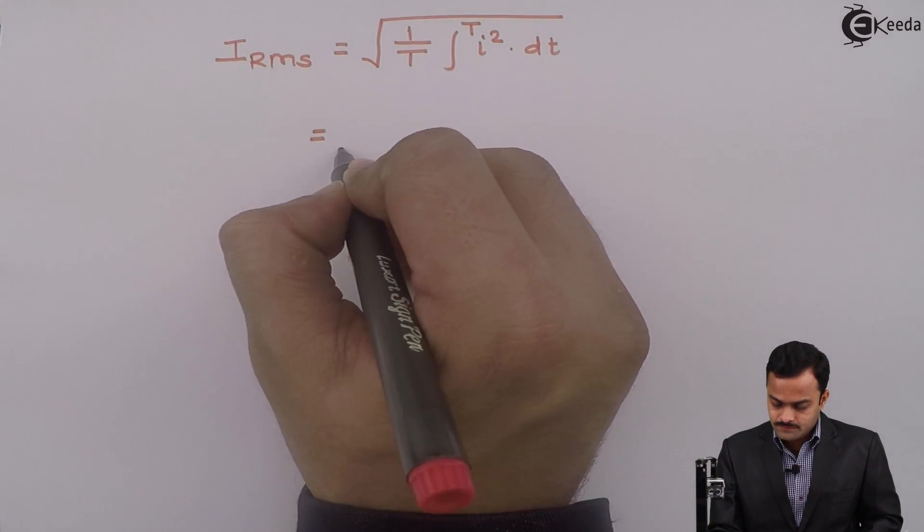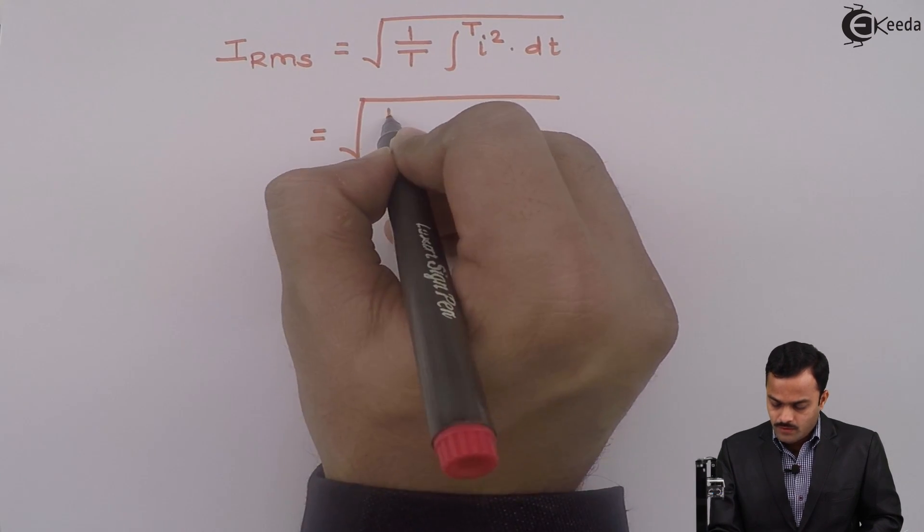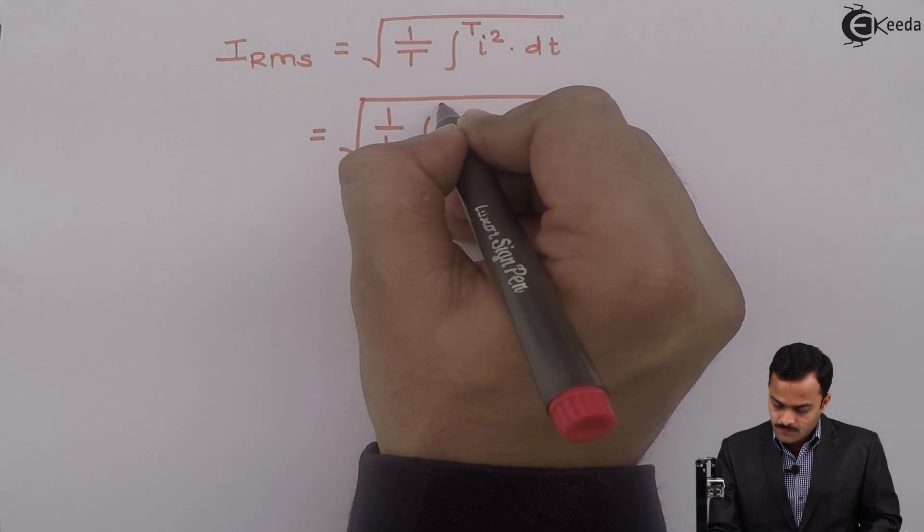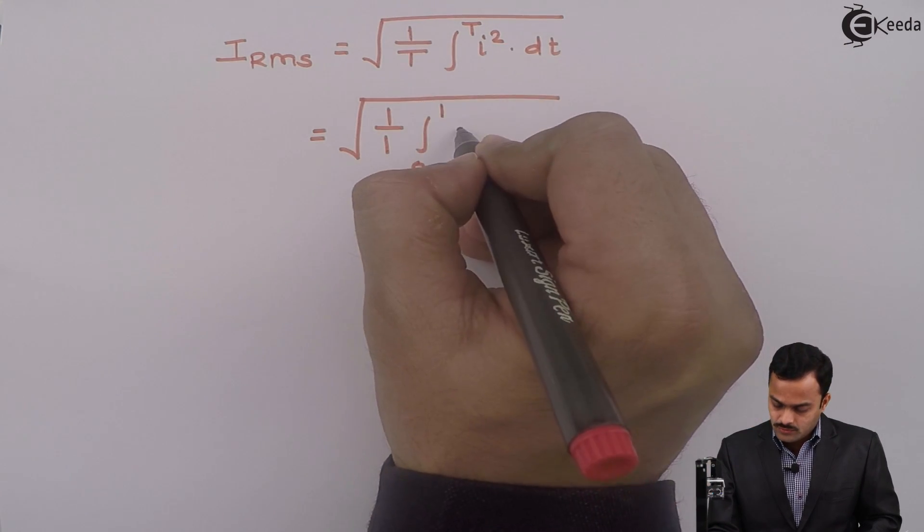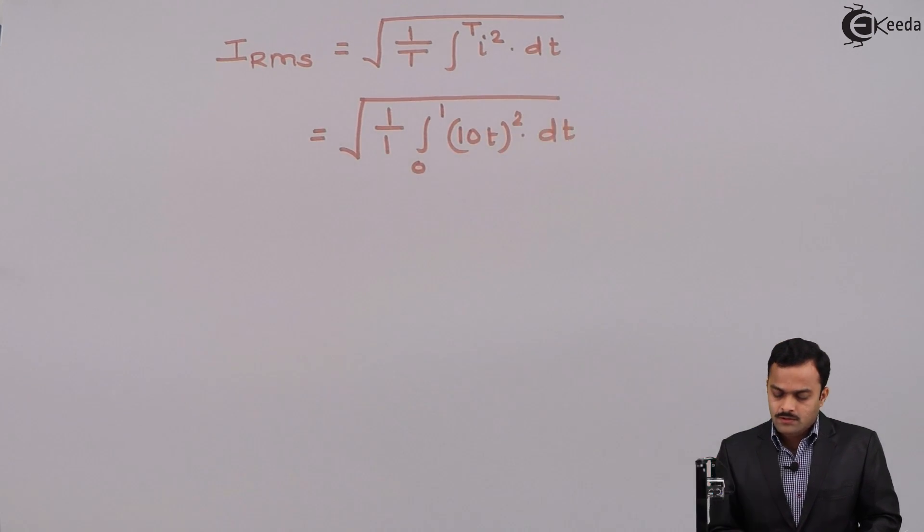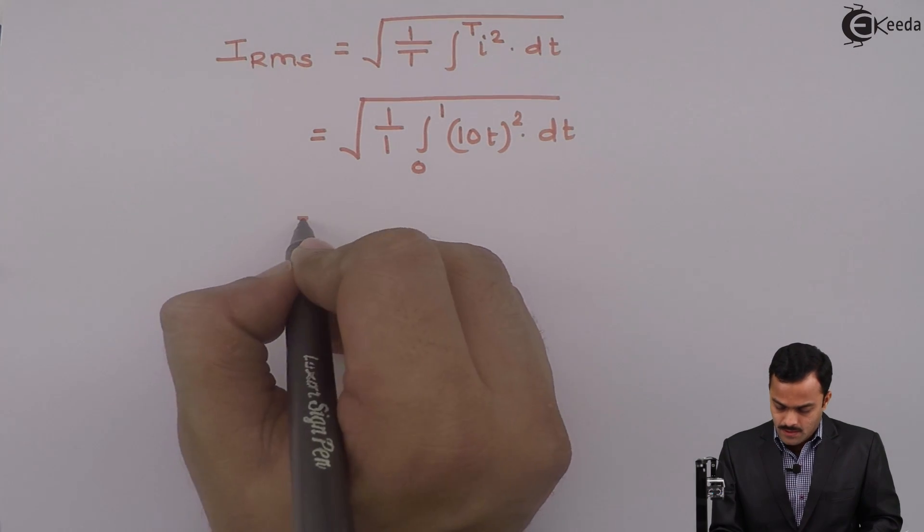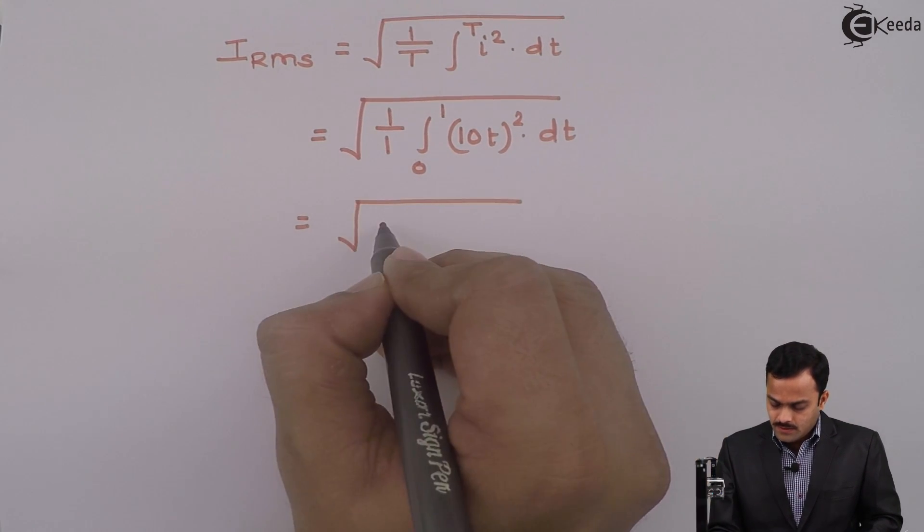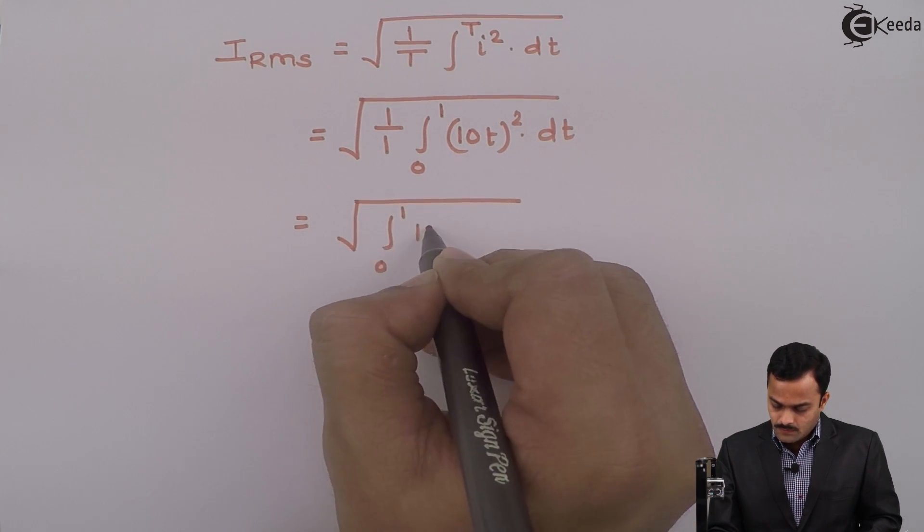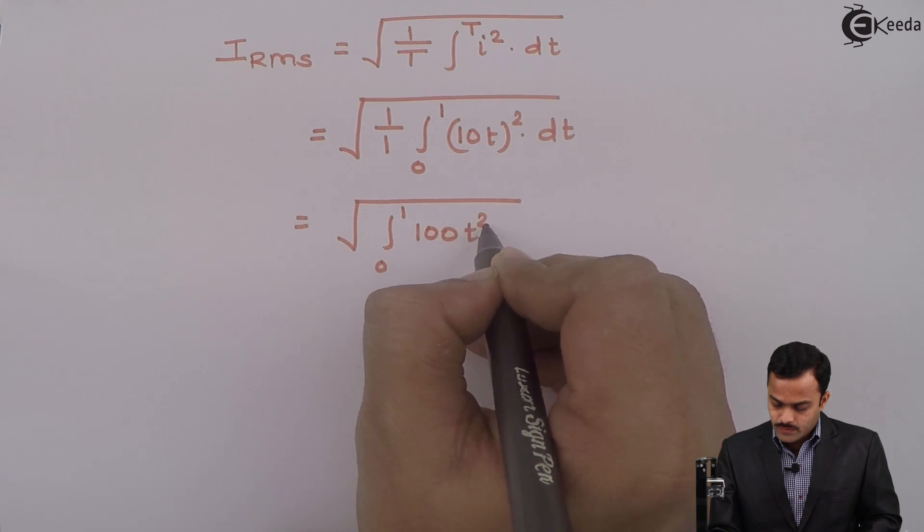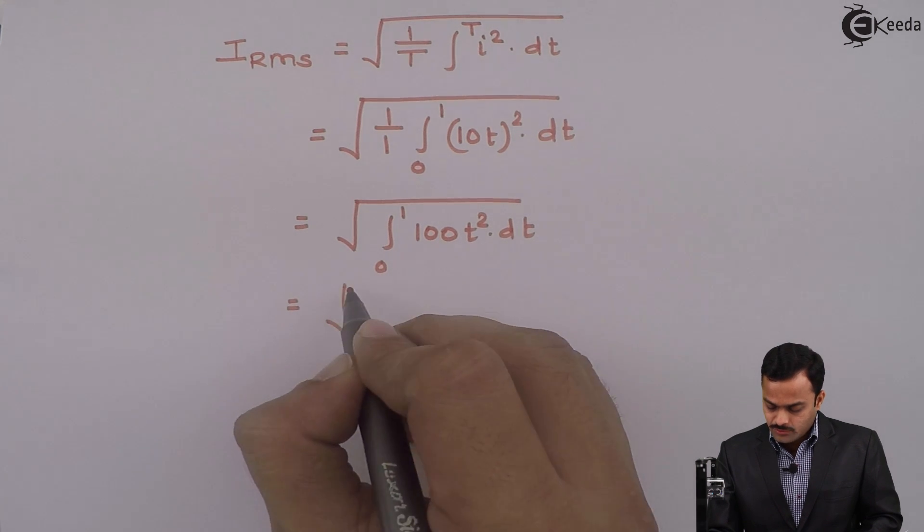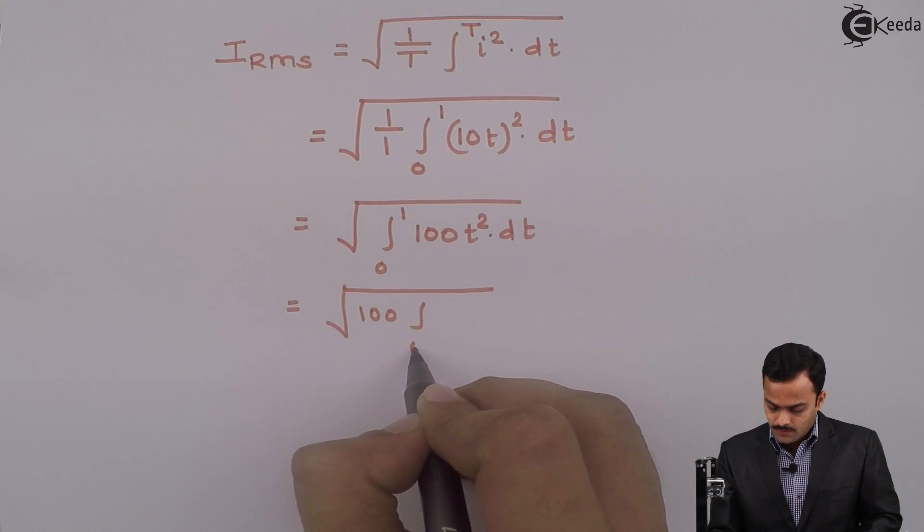Let us substitute the value. 1/1, waveform exists from 0 to 1. i is 10t, so (10t)² dt. It is root integral 0 to 1, 100t². 100 is a constant, I will take it out of integration.